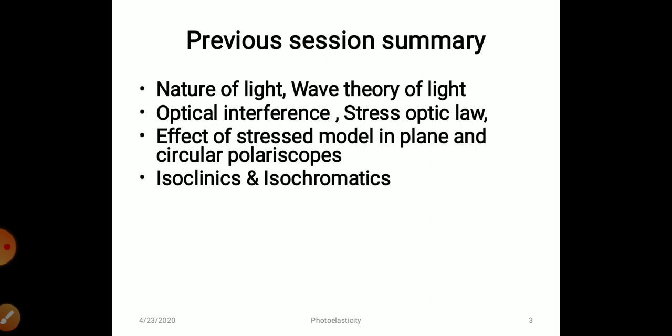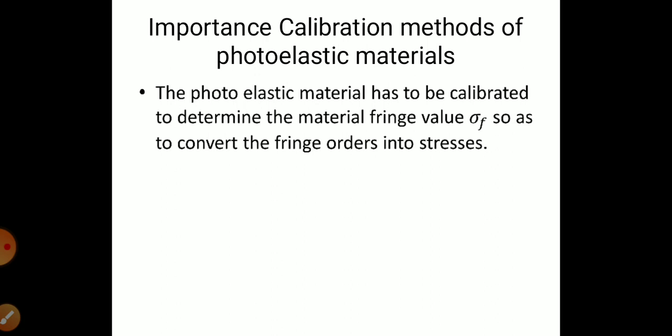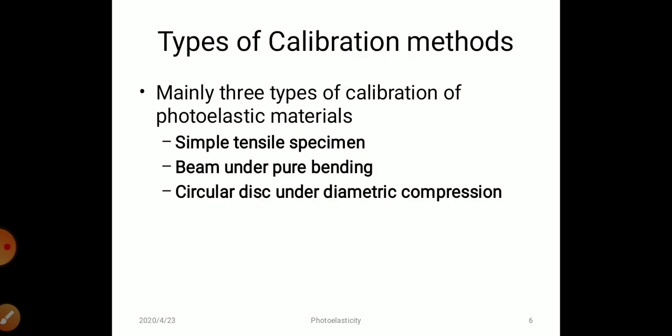We also discussed isoclinics and isochromatics. In today's session we will be discussing the importance of calibration and the methods of calibration of photoelastic materials — why we have to calibrate these components. The main importance of calibration for a photoelastic component is to find out sigma-f, the fringe value of that particular material, which in turn helps us find the stress in the component.